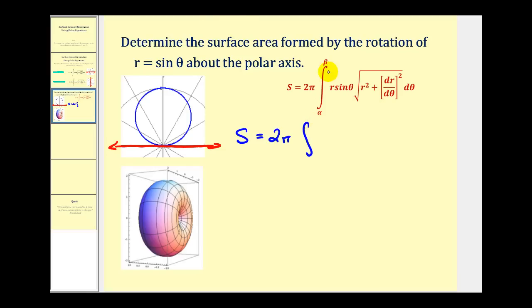We need to be careful about the limits of integration. Even though the period of the sine function is two pi radians, this entire circle is traced out from zero to pi radians, so our limits of integration are from zero to pi. To verify: when theta equals zero, r equals zero, so we're at the pole. When theta is pi over two, sine of pi over two equals one, so we're halfway around the circle. When theta equals pi, sine of pi equals zero, so we're back at the pole.